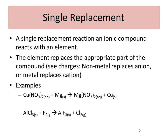Single replacement reactions — this is the new stuff, so you are going to want to copy this down. In a single replacement reaction, an ionic compound is reacting with an element, and the element replaces the appropriate part of the compound. For that, you'd have to take a look at your ion list. A non-metal is going to replace an anion. A metal replaces a cation.